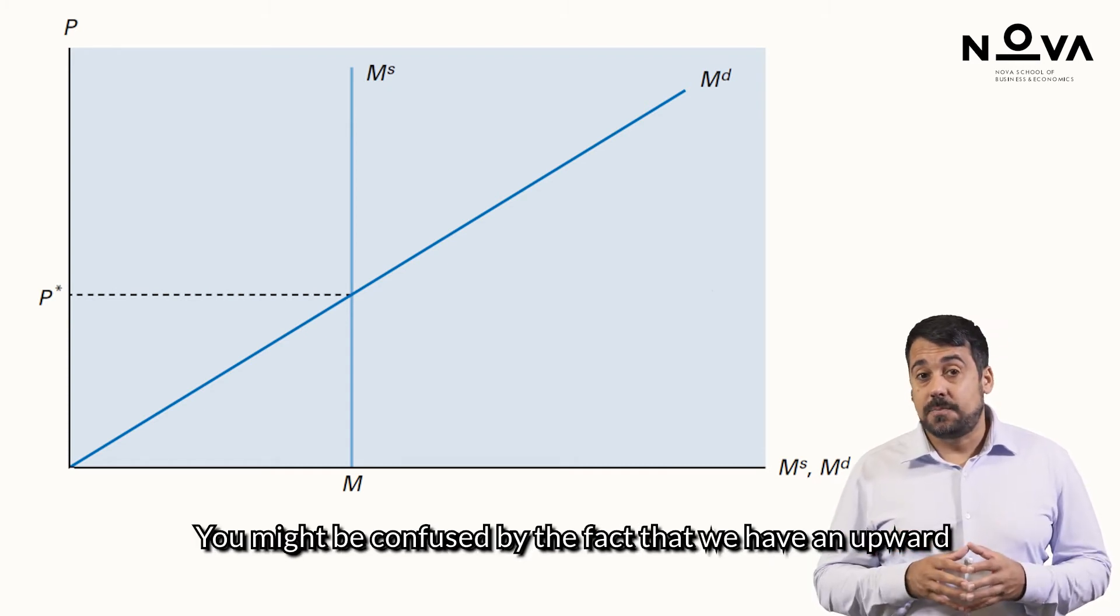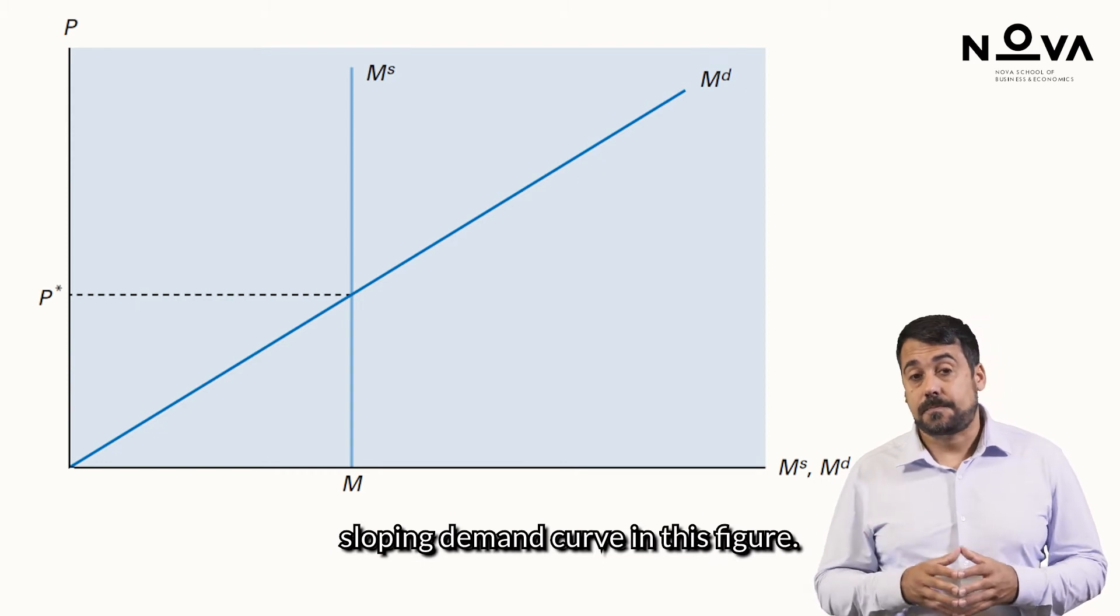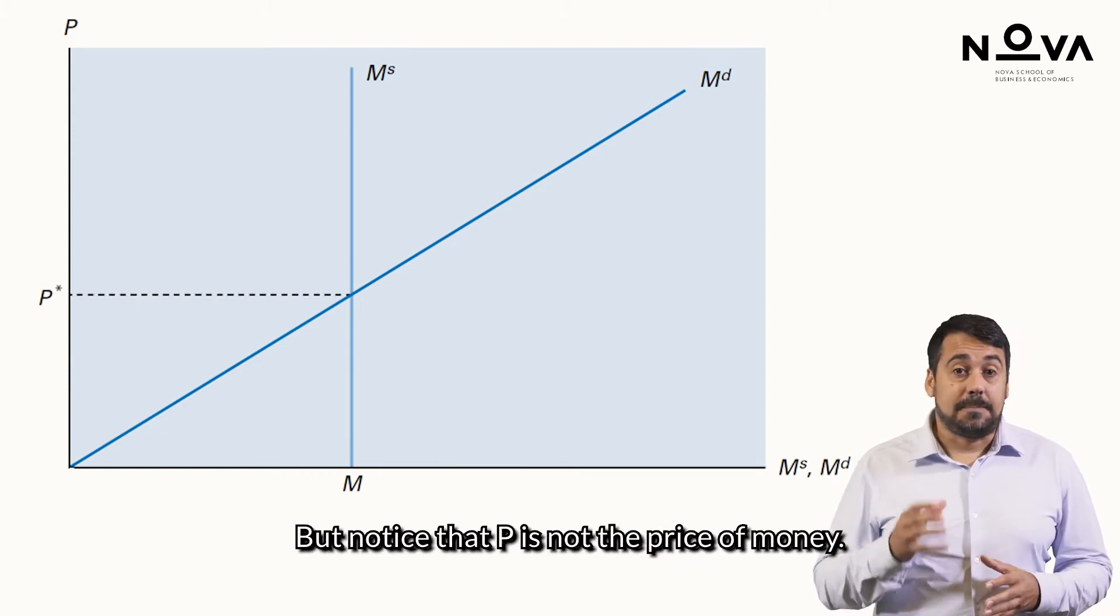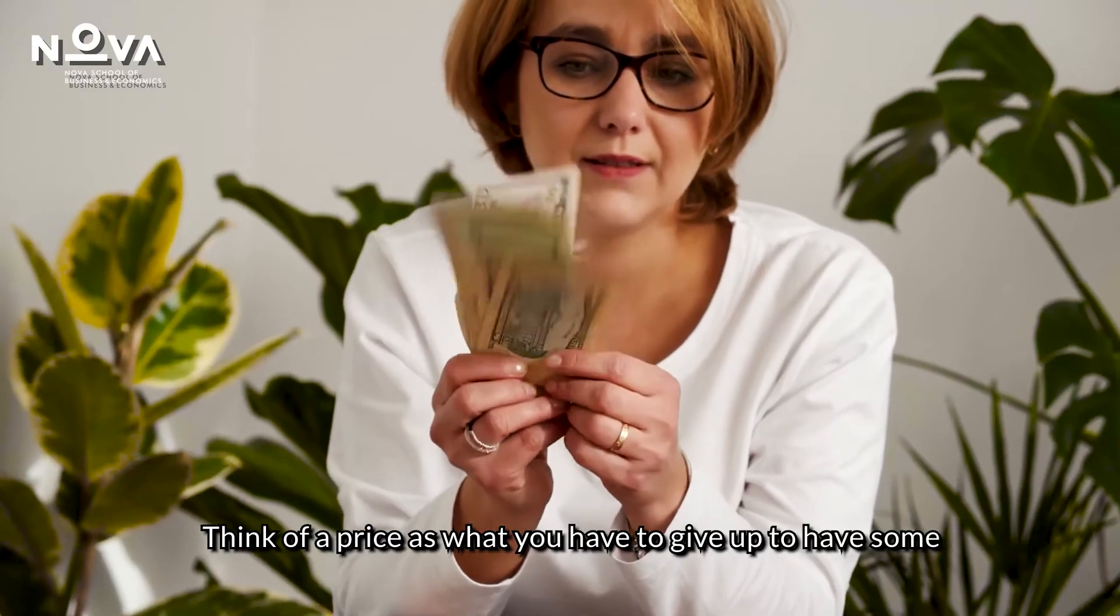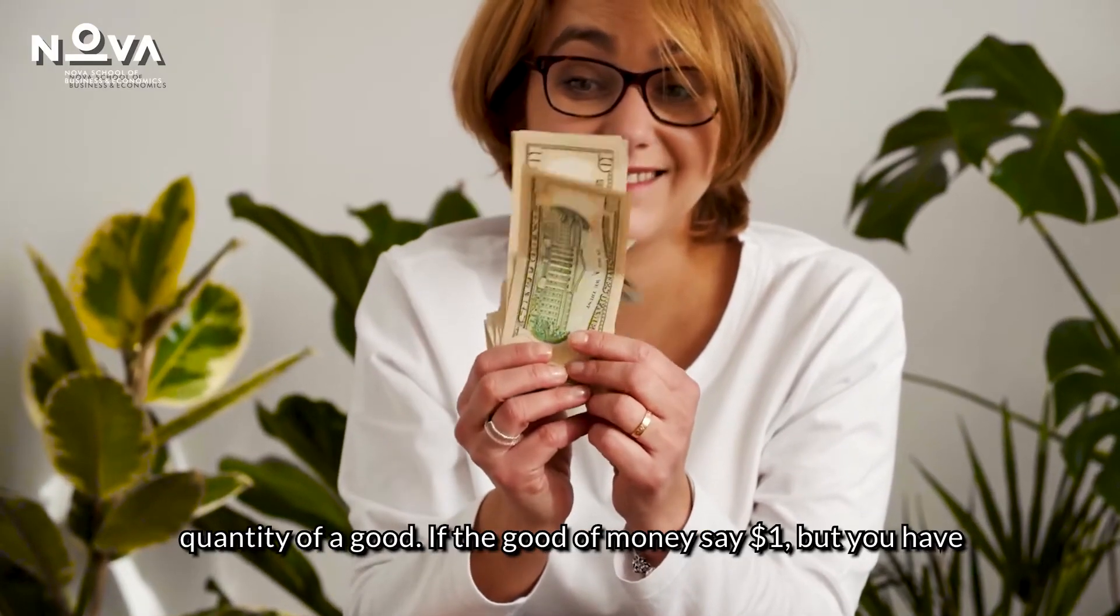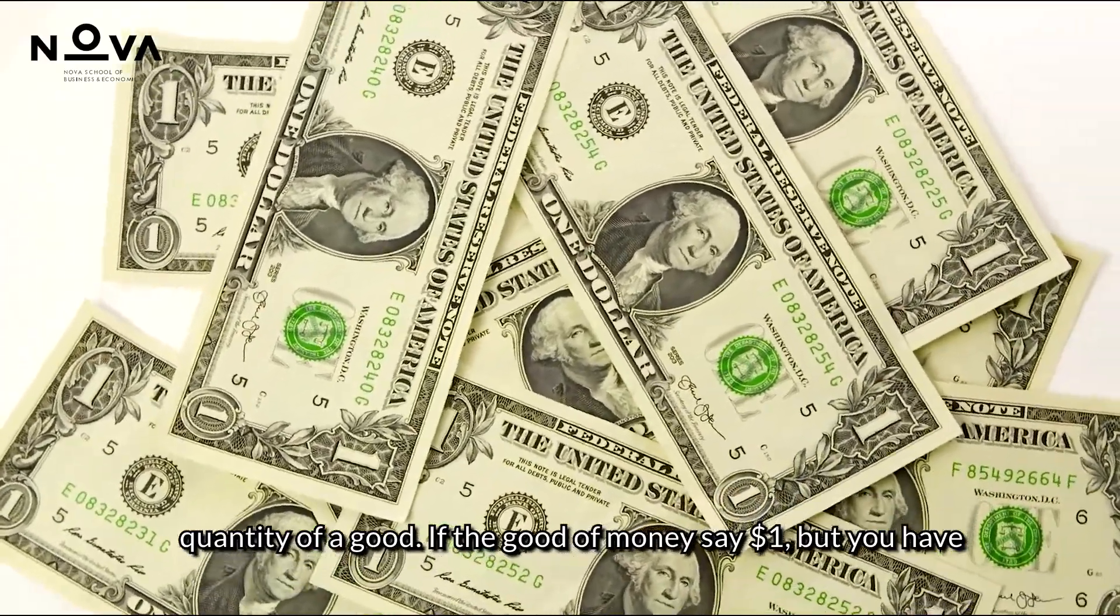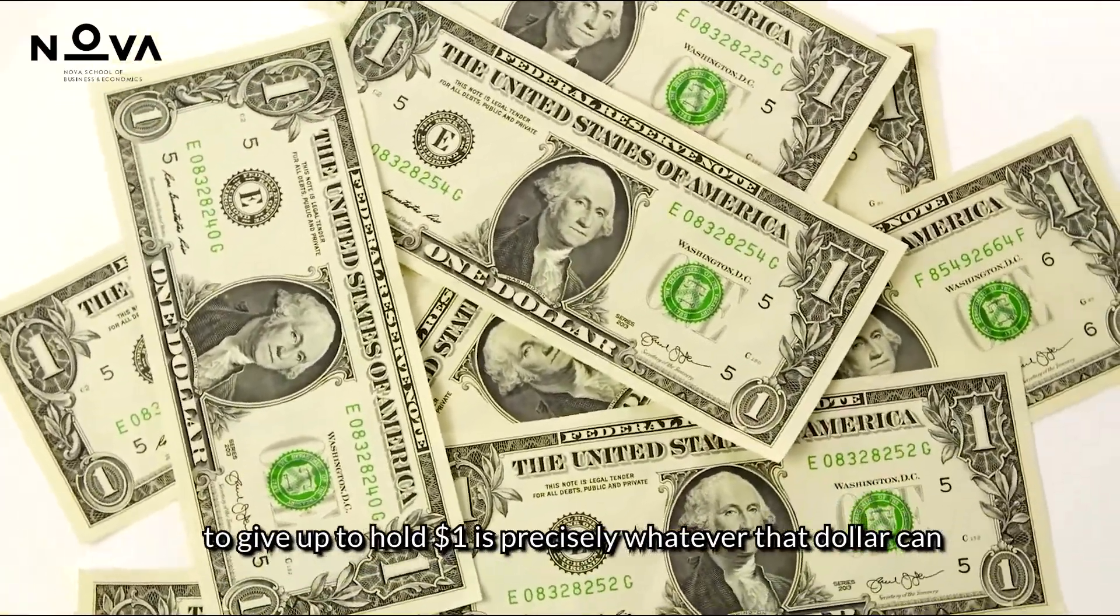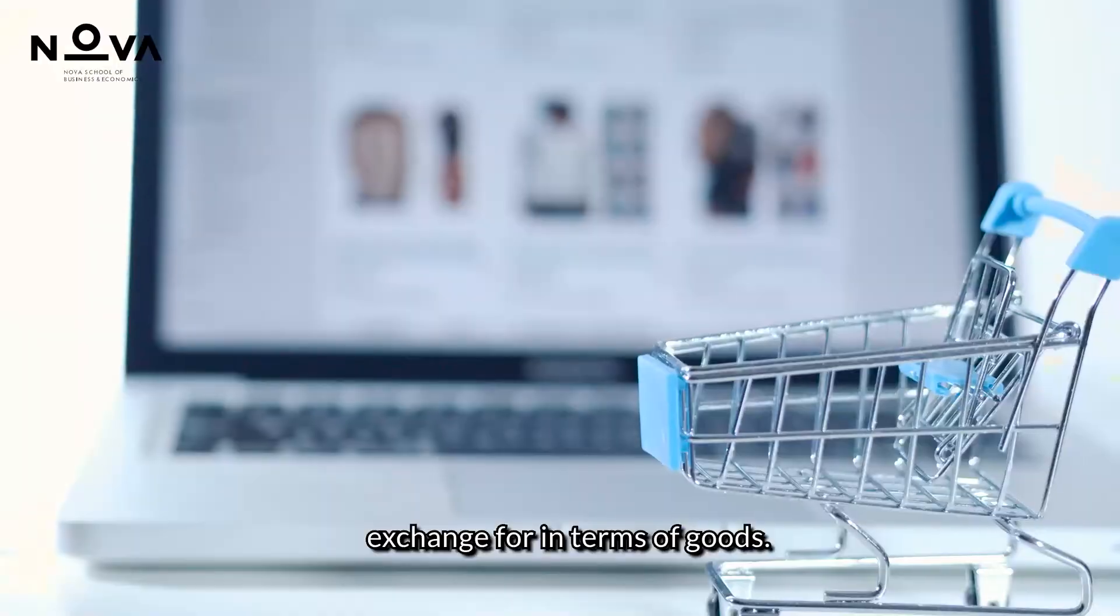You might be confused by the fact that we have an upward sloping demand curve in this figure. But notice that P is not the price of money. Think of a price as what you have to give up to have some quantity of a good. If the good is money, say $1, what you have to give up to hold $1 is precisely whatever that dollar can exchange for in terms of good.